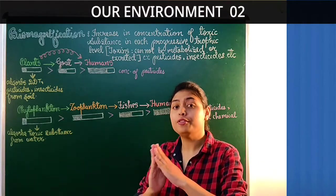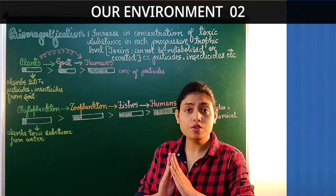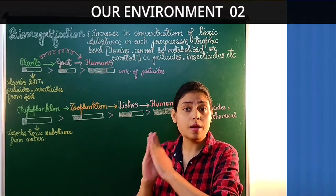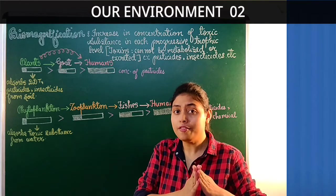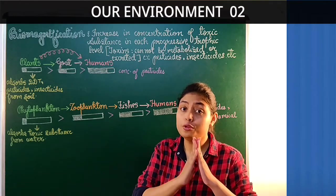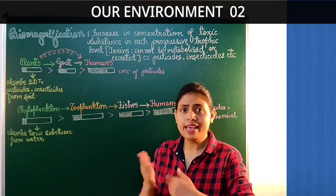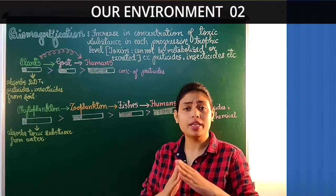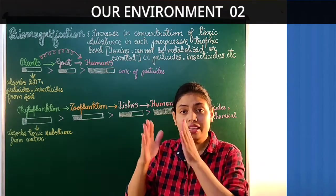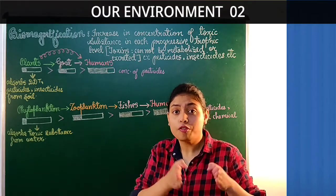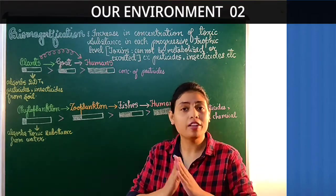Biomagnification refers to the increase in concentration of toxic substances at each progressive trophic level of the food chain. In simple words, accumulation of toxic substances at each trophic level is called biomagnification.